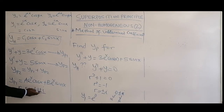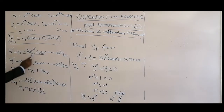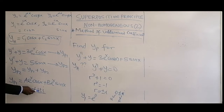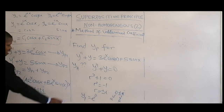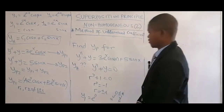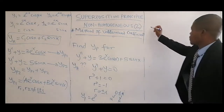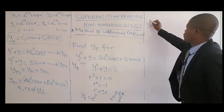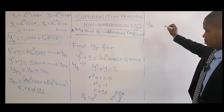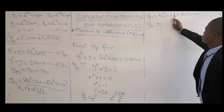If the roots that generate the function equal the root of the auxiliary equation, then you would multiply the expression by x. Since none of the roots match here, we proceed directly. Let's get the first derivative of yp1.